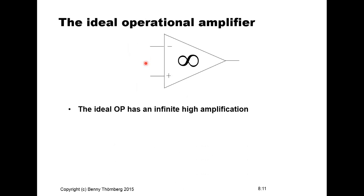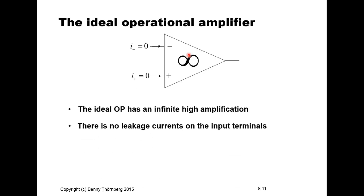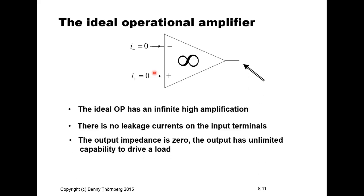This leads us to the ideal model of the operational amplifier. For this model, we assume infinite amplification as used in our previous analysis. We also assume that leakage currents on the input terminals are zero, meaning input impedance approaches infinity. And the output impedance of the amplifier is zero, so the output has an unlimited capability of driving currents.